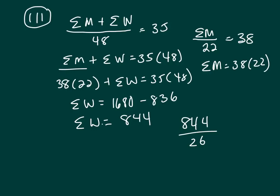32 and a decimal. So it would be D, 32.5.